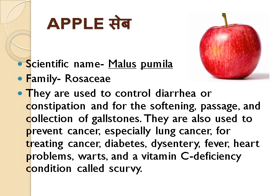Apple, scientific name Malus pumila, family Rosaceae. They are used to control diarrhea or constipation and for softening, passage and collection of gallstones. They are also used to prevent cancer, especially lung cancer, and for treating diabetes, dysentery, fever, heart problems, warts, and vitamin C deficiency — a condition called scurvy.